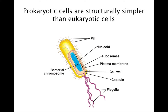Bacteria and archaea consist of prokaryotic cells. A prokaryotic cell lacks a nucleus. The DNA of a prokaryotic cell is coiled into a region called the nucleoid, which has no membrane surrounding the DNA. The ribosomes of prokaryotes are smaller and differ somewhat from those of eukaryotes. Outside the plasma membrane of most prokaryotes is a fairly rigid, chemically complex cell wall, which protects the cell and helps maintain its shape.